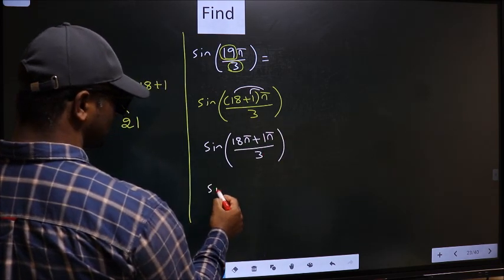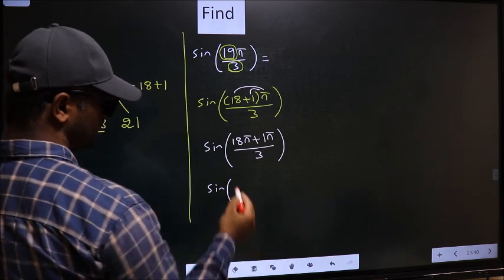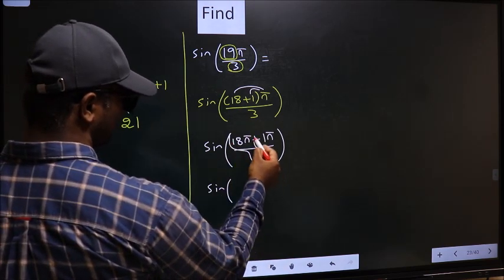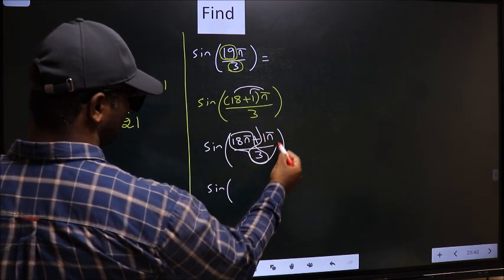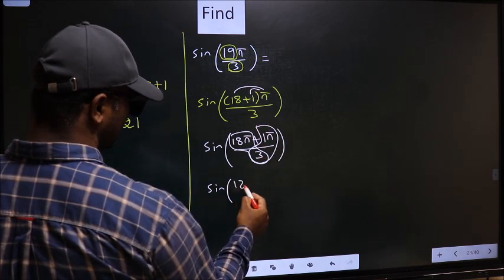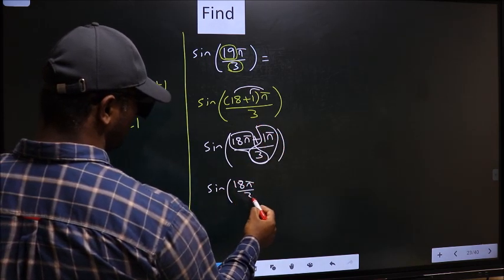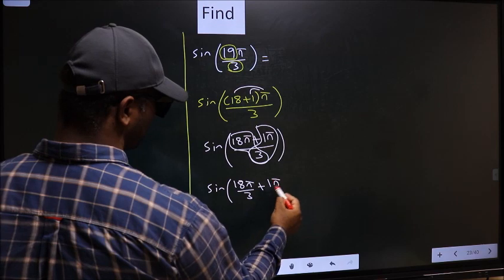Now you should split the denominator in this way. That is 18π by 3 plus 1π by 3.